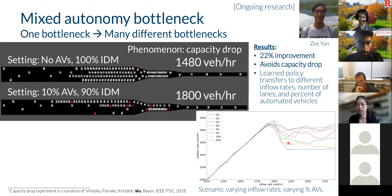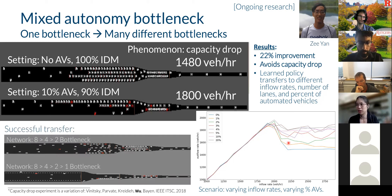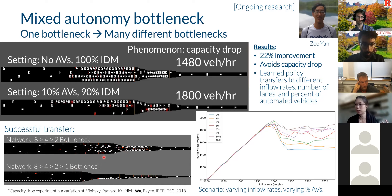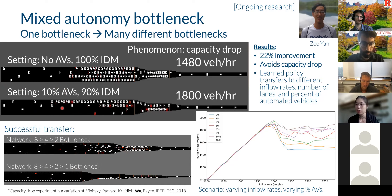We then took that same policy and asked whether it would apply across different kinds of bottlenecks — an eight-lane bottleneck constricting to four then two, and a longer bottleneck with four segments rather than three. Again, we are able to avoid the capacity drop phenomenon through this kind of transfer, without the learning agent ever having seen these bottlenecks or a world with only 1% or 20% autonomous vehicles. We've only ever seen the original bottleneck with 10% of autonomous vehicles.